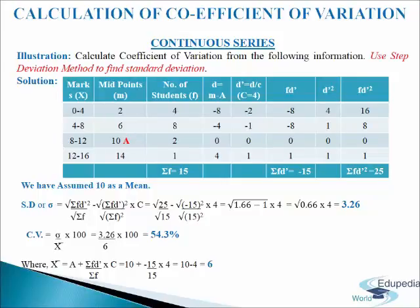In the third column we write number of students (frequencies): 4, 8, 2 and 1, giving sigma F equals 50. In the fourth column D equals M minus A: 2 minus 10 gives minus 8; 6 minus 10 gives minus 4; 10 minus 10 gives 0; 14 minus 10 gives 4. In the fifth column D dash equals D divided by C, where C is the common factor 4: minus 8 divided by 4 is minus 2; minus 4 divided by 4 is minus 1; 0 divided by 4 is 0; 4 divided by 4 is 1.